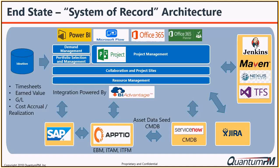Let's talk about what I would call a classic example of a system of record architecture. A system of record architecture really allows the best practices of different applications to be captured in a way that lets them do what they do best, eliminates redundancy of data entry, and allows different things to focus on different applications. From an overall landscape perspective, this maximizes the utility of what's being delivered and also forces strategic alignment.